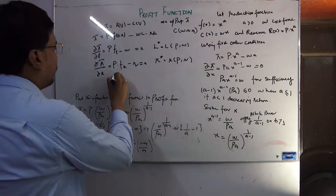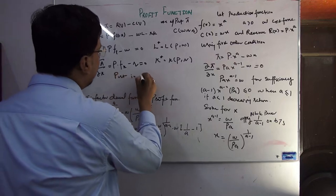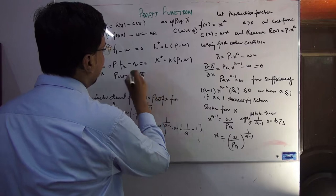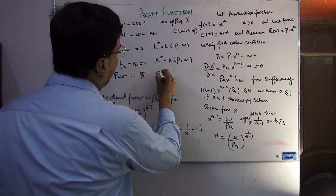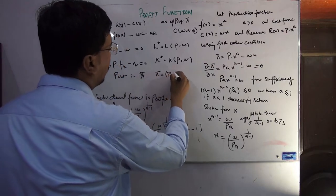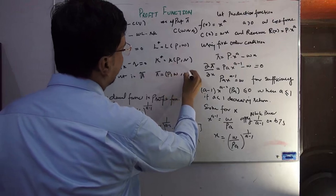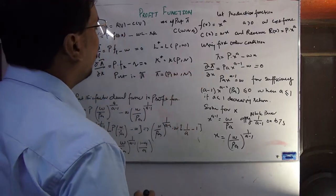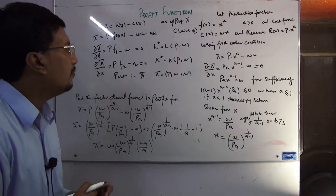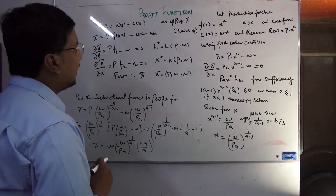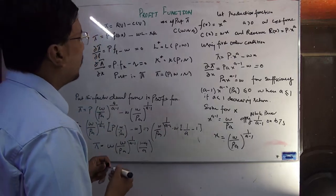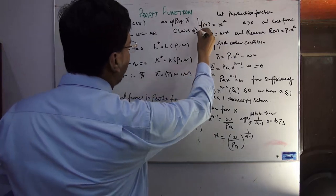Very simple step — plug these factor demand functions into the profit function. The profit function then becomes a function of the price of output, the price of labor, and the price of capital. By applying the first order condition we can find the profit function. These are the steps written in general form.